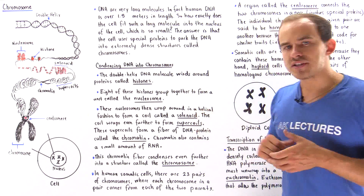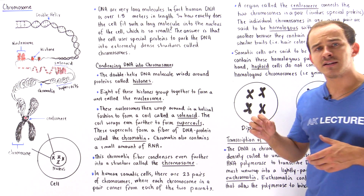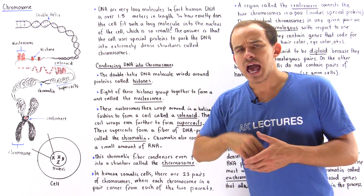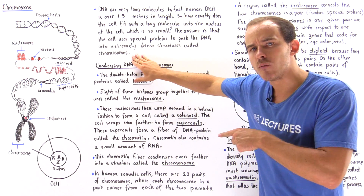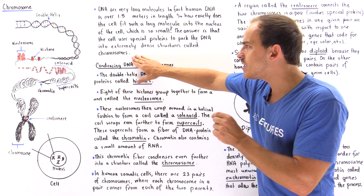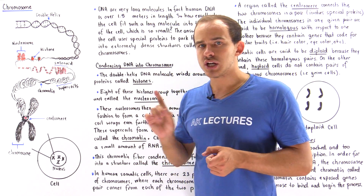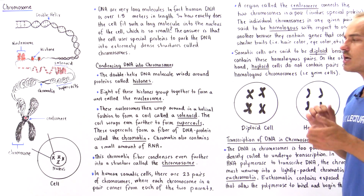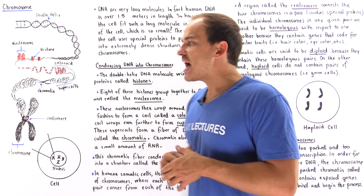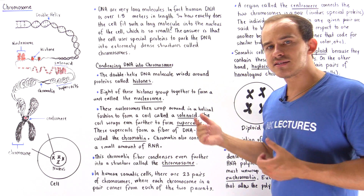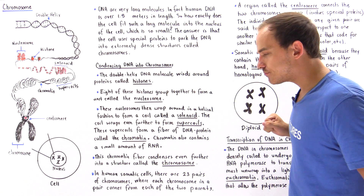Basically, what the cell does is it uses special proteins to condense and coil our DNA into a very dense structure known as the chromosome. The chromosome consists predominantly of protein, the rest is DNA, and a very small portion consists of RNA molecules. Let's take a look at the diagram that describes the process by which the cell condenses DNA into chromosomes.